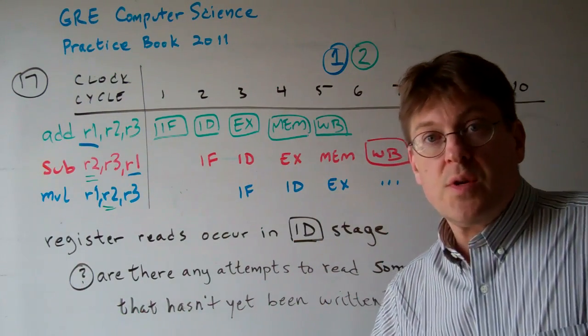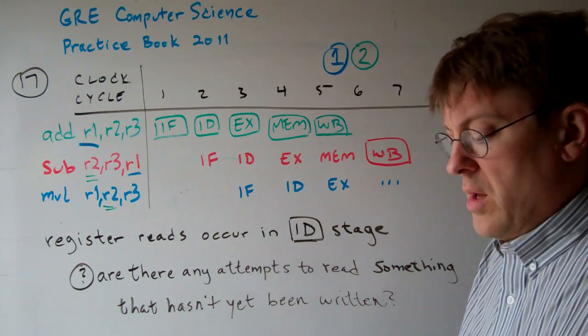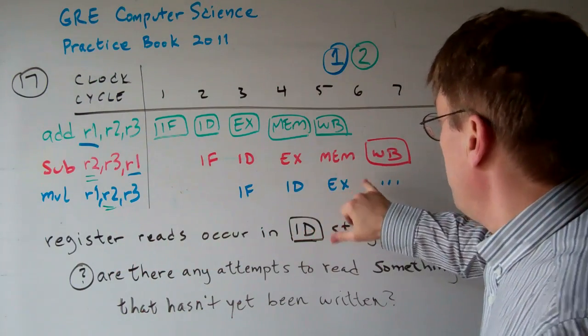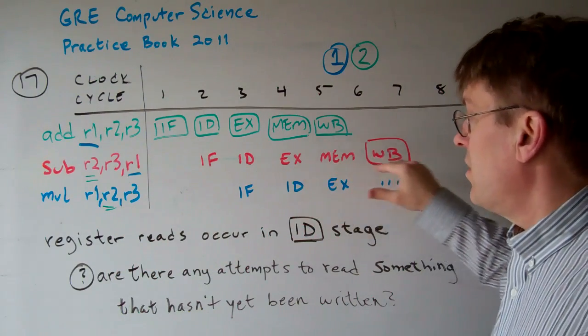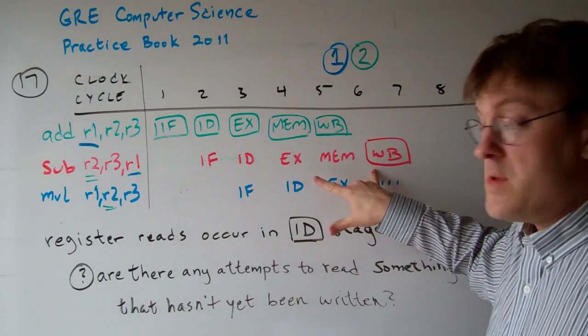So it might be trying to use a value that's not ready to be used yet because it hasn't been written yet. And you can see that depending on how long the subtract takes and how long the multiplication takes, it might be an issue.